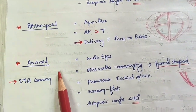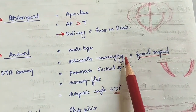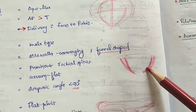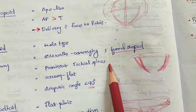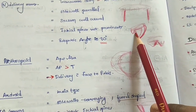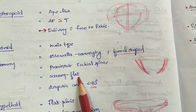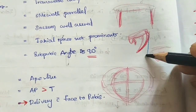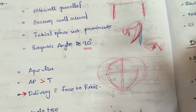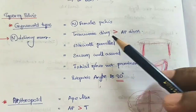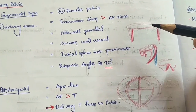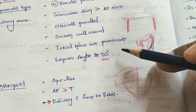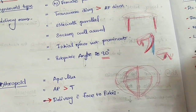The android pelvis is the male-type pelvis. The side walls are converging and it has a funnel shape. The ischial spines are prominent, the sacrum is flat, and these features are unfavorable compared to the gynecoid pelvis where walls are parallel, sacrum is curved, spines not prominent, and subpubic angle is around 90 degrees.